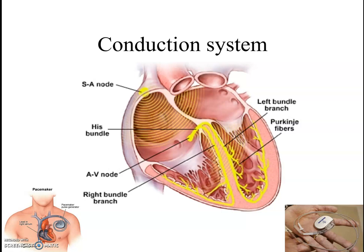The heart beats continuously due to cardiac muscles. The beating is initiated and controlled by the heart itself. The heart has specialized tissues — specialized cardiac muscle fibers called nodes. There are two nodes in the human heart: the SA node and the AV node. The SA node is the sino-auricular node, and the AV node is the auriculo-ventricular node.